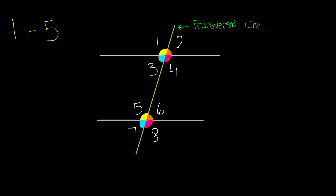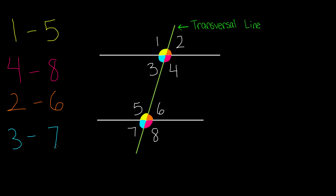In the same way, angle number four is below the line and on its right side, and angle number eight is also below the line and on its right side. So angle number four and angle number eight are also two corresponding angles. Similarly, we have angle number two and angle number six, and also angle number three and angle number seven. So these are four pairs of corresponding angles — two angles that are in the same corners when a line crosses two other lines.